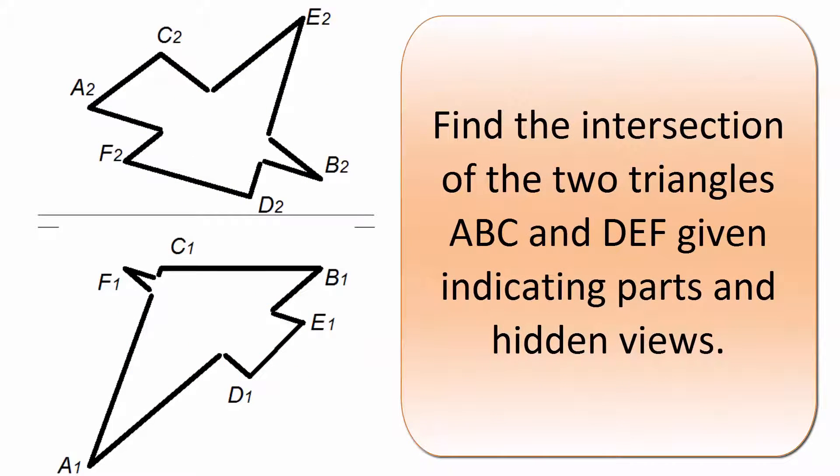The statement says, find the intersection of the two triangles ABC and DEF given indicating parts and hidden views.